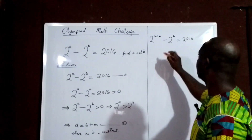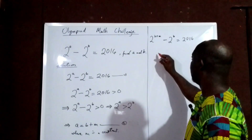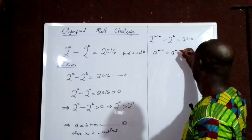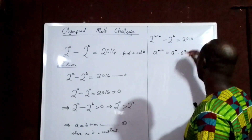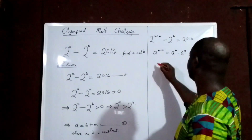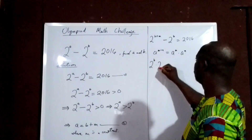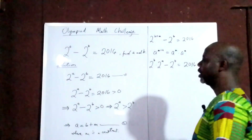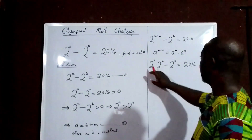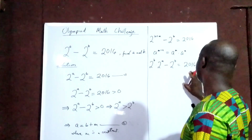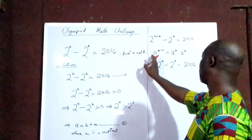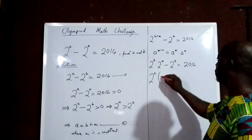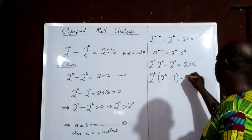From indices, we know that A to the power of M plus N is the same as A to the power of M times A to the power of N. So we rewrite this as 2 to the power of B times 2 to the power of M, minus 2 to the power of B, equals 2016. Factorizing the left-hand side, since 2 to the power of B is a common factor, we get 2 to the power of B times open bracket 2 to the power of M minus 1, equals 2016.